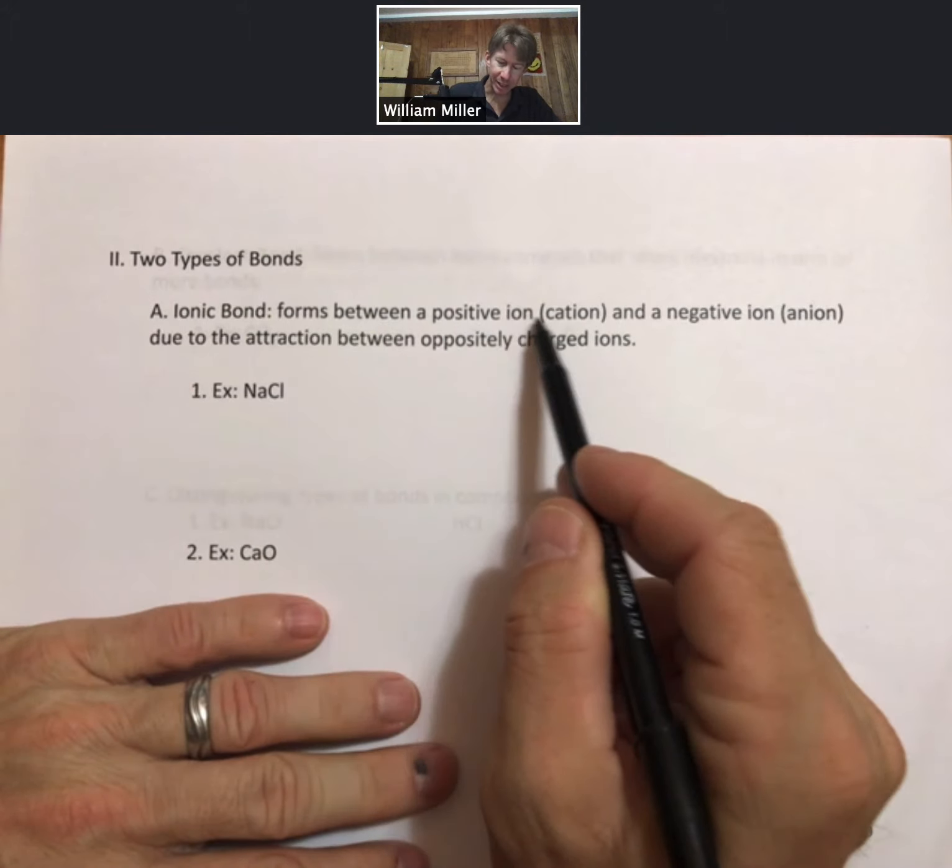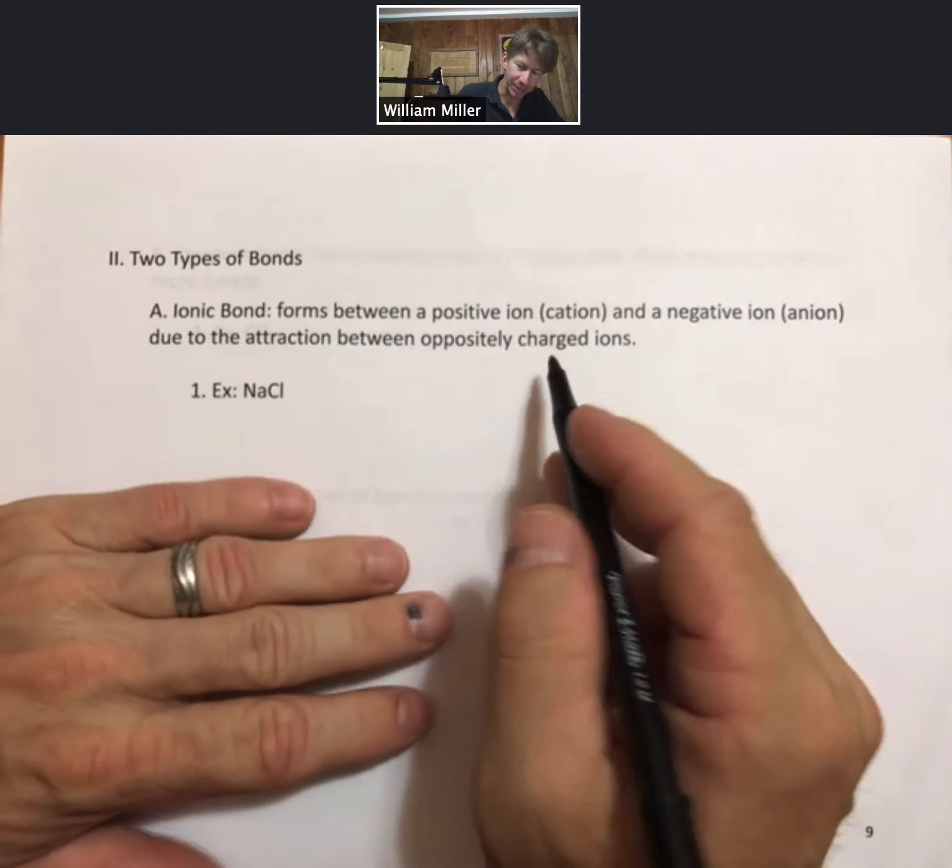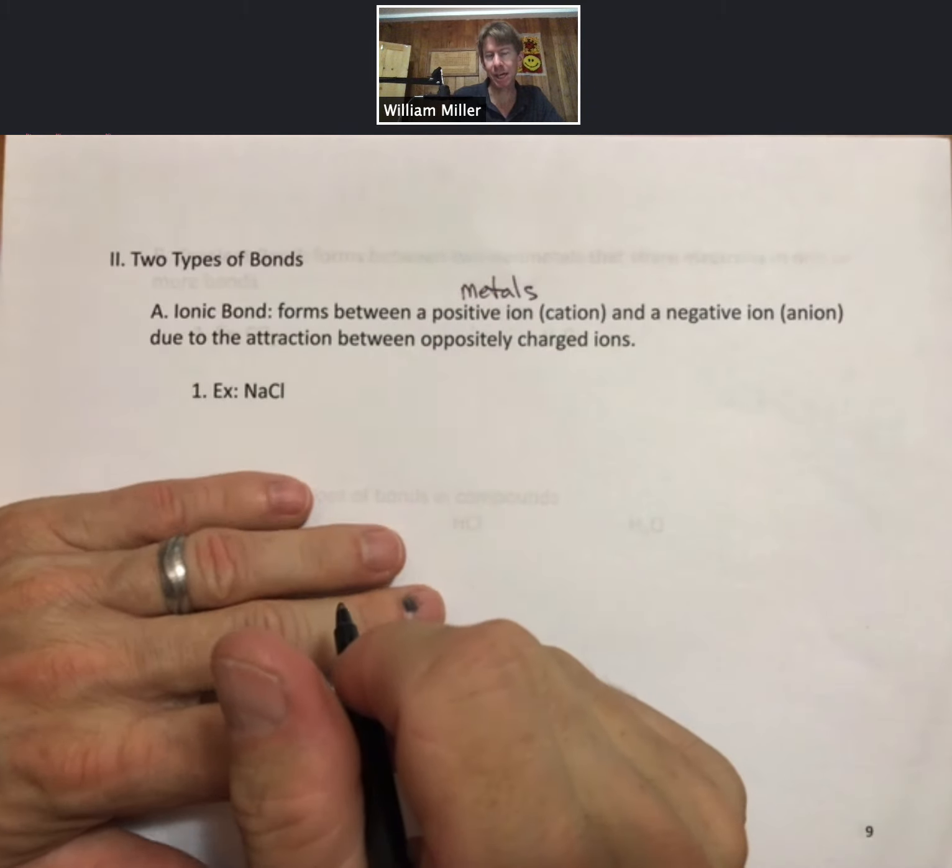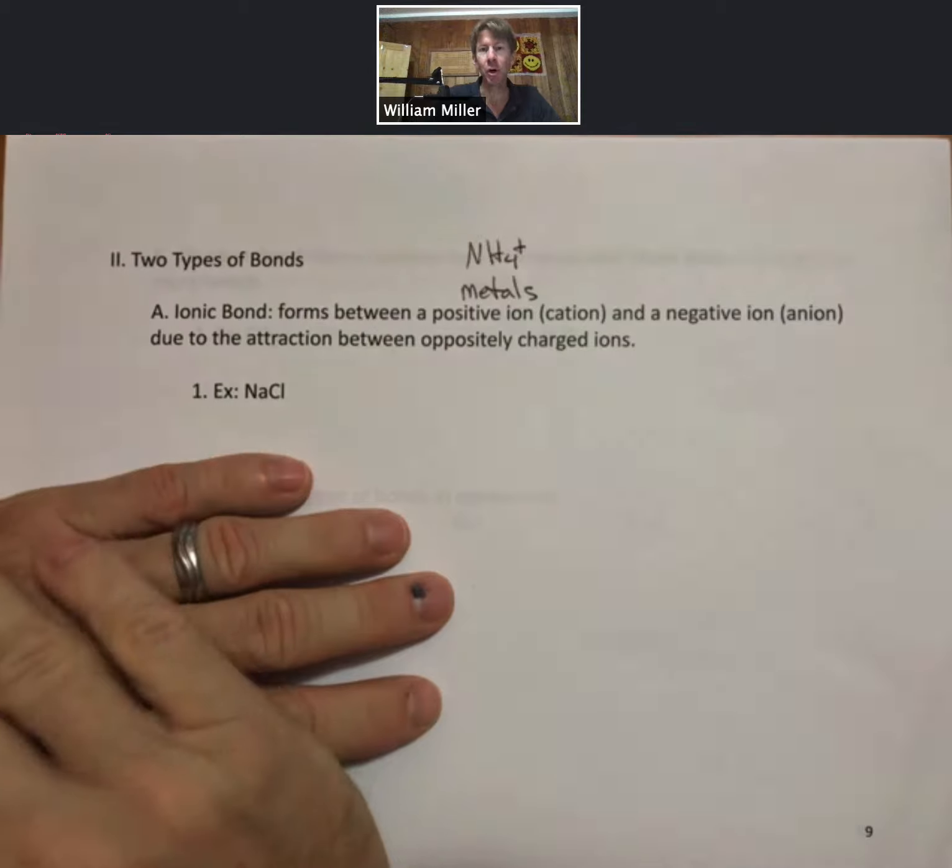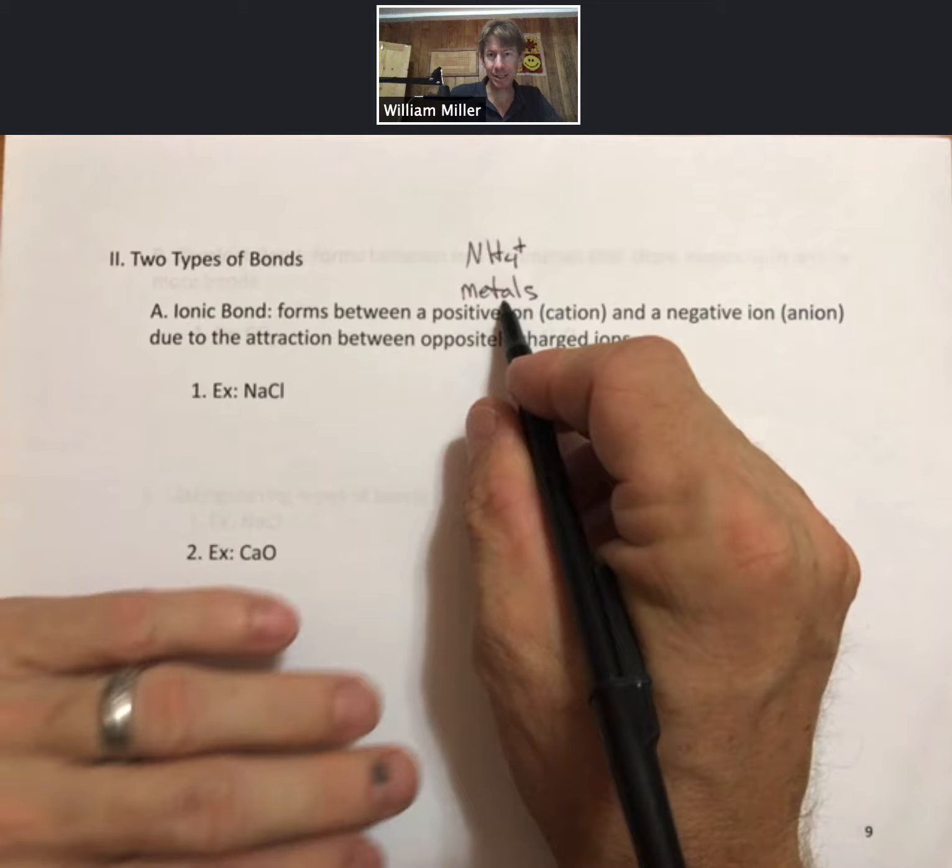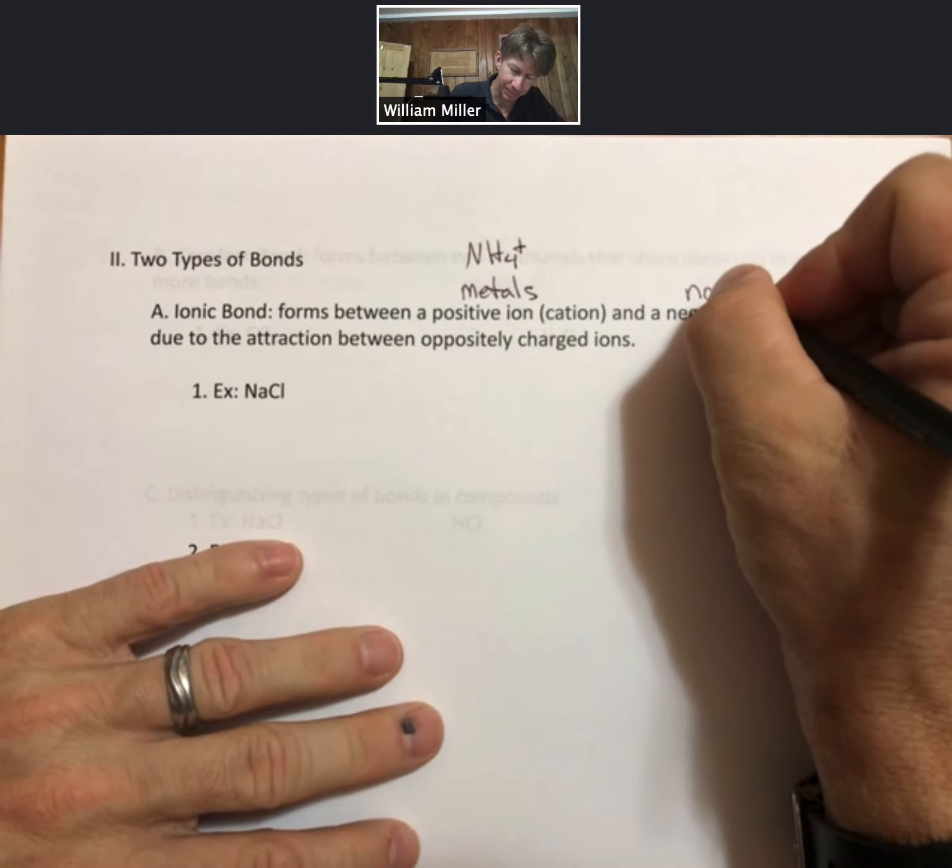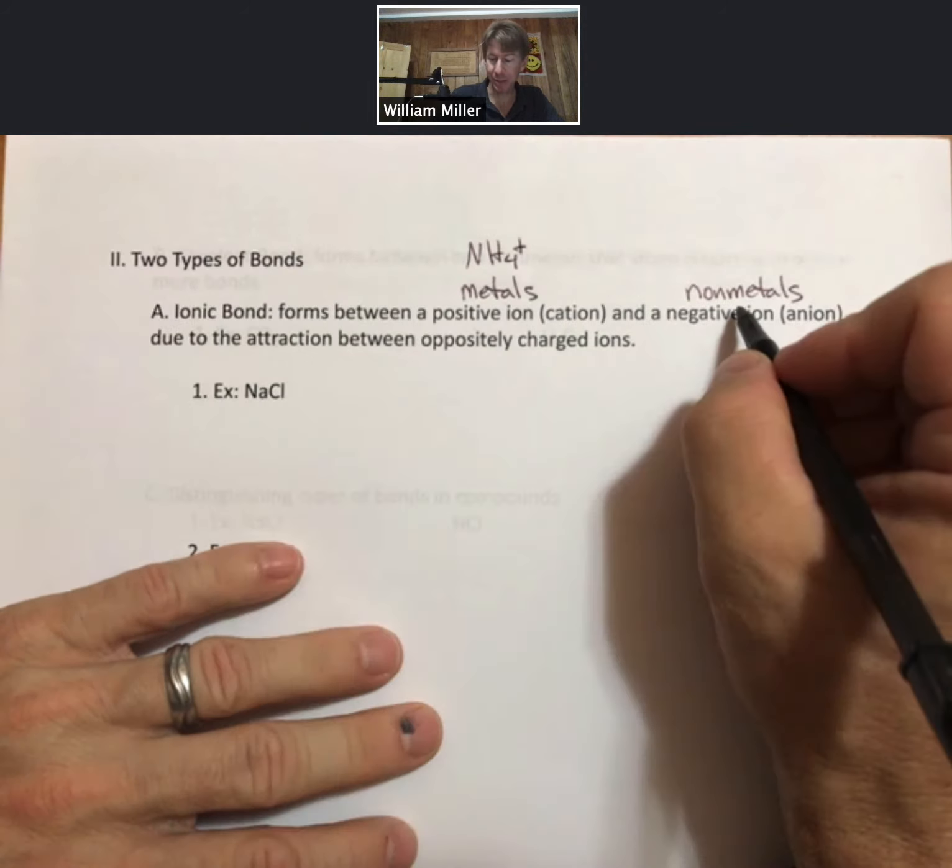Positive ions or cations are always going to form from metals. There is one example that is not made out of nonmetals and it is the ammonium ion, NH4+. Otherwise, you're always going to see cations made out of metals or metal ions. The negative ions will be made out of nonmetals.